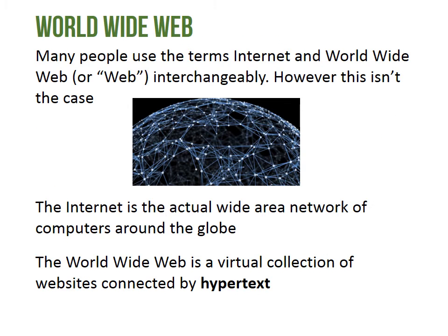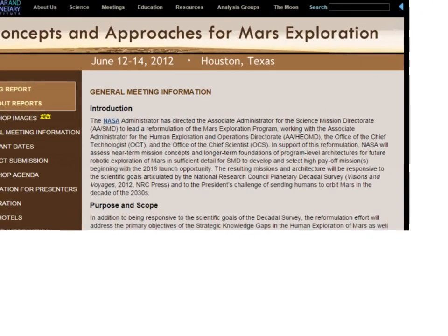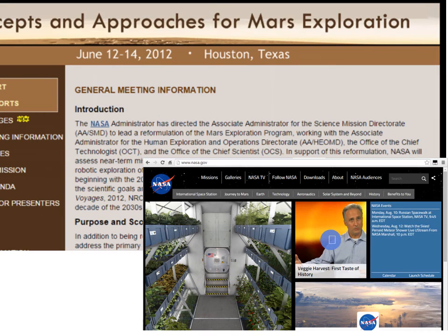Let's move on to the World Wide Web. Many people use the terms Internet and World Wide Web, or Web, interchangeably. However, this isn't the case. The internet is the actual wide area network of computers around the globe, while the World Wide Web is a virtual collection of websites connected by hypertext. When viewing web pages, there are certain words or images that, when clicked, allow you to go to a different web page — this ability is called hypertext.